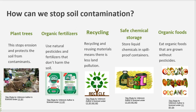How can we stop soil contamination? First, you can plant trees — this stops erosion and protects the soil from contaminants. Next, you can use organic fertilizers — natural pesticides and fertilizers that don't harm the soil. Third, recycling can help; recycling and reusing materials means there's less land pollution. Fourth, safe chemical storage: store liquid chemicals in spill-proof containers. Fifth, eating organic foods — eat organic foods that are grown without pesticides.